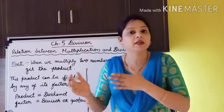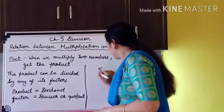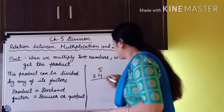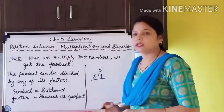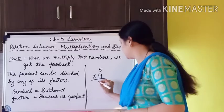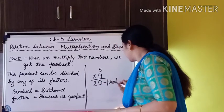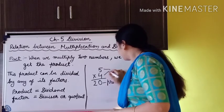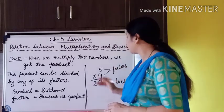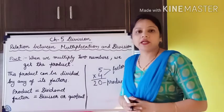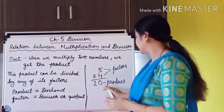What is the relationship between multiplication and division? Like 5 multiplied by 4 — these are the two factors. 4 5s are 20. So here 20 is the product, and 5 and 4 are the factors. When we multiply two different factors we get the product.